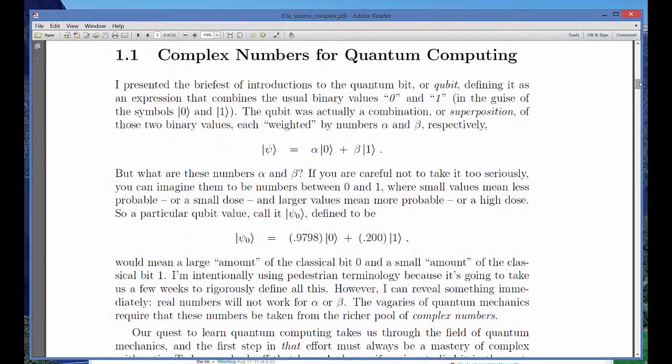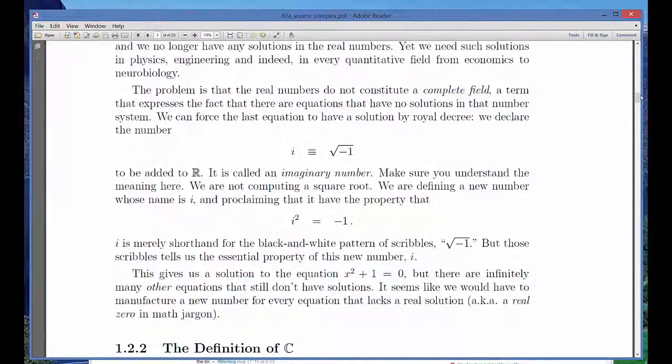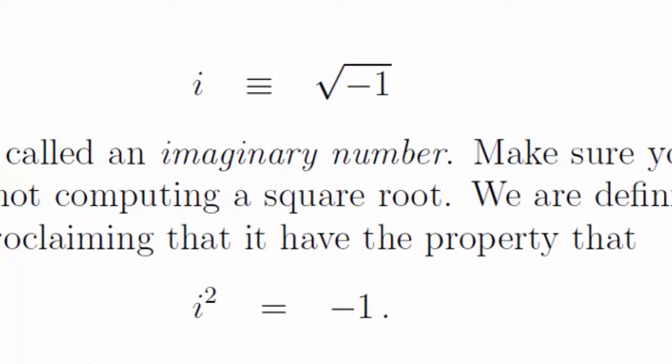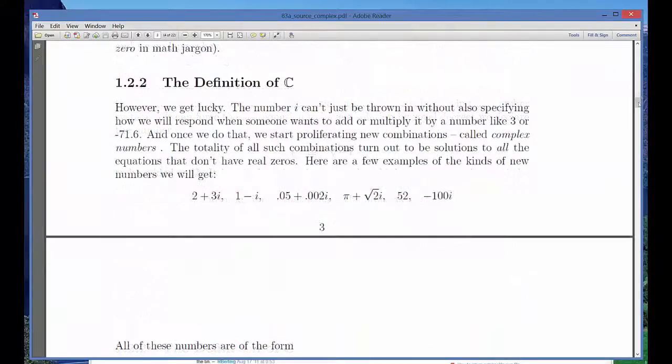We build up the complex number system by starting with a new literal constant called i. i is the square root of negative 1, already a creature that doesn't exist in the reals. From there, we construct all possible combinations of i with other real numbers. Here are a few examples.